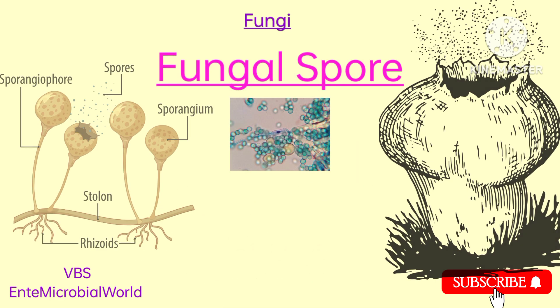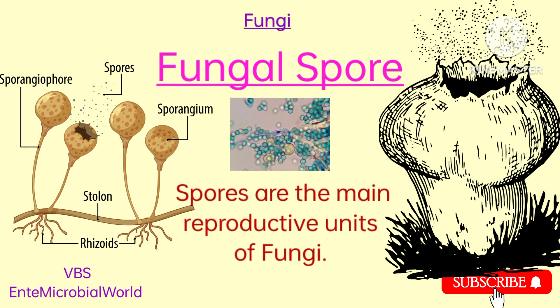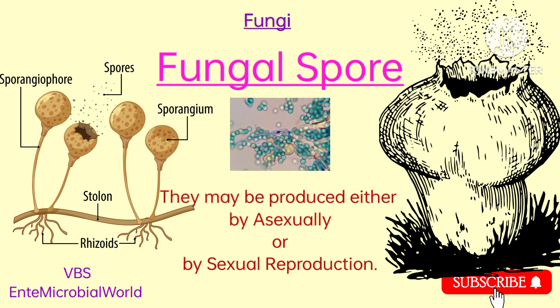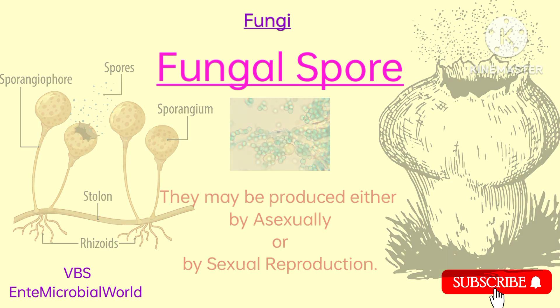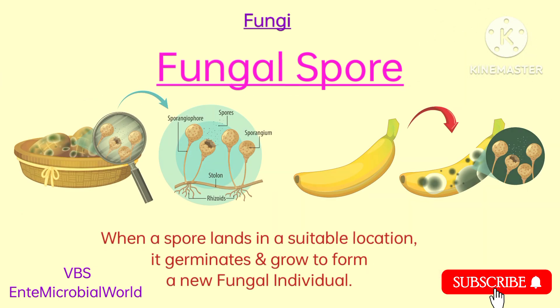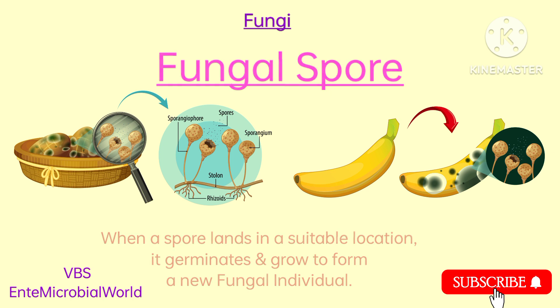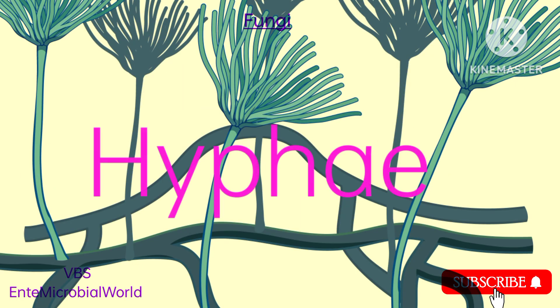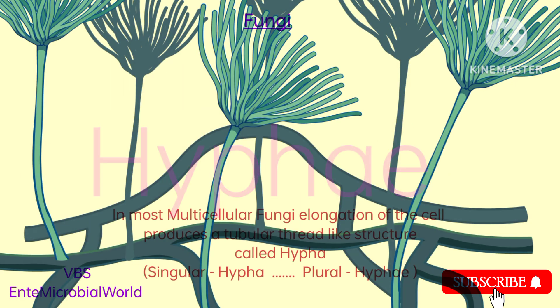Spores are the main reproductive units of fungi. They may be produced asexually or by sexual reproduction. When a spore lands in a suitable location, it germinates and grows to form a new fungal individual. Next, we are going to see what is a hyphae.